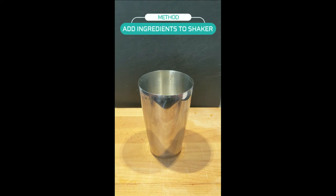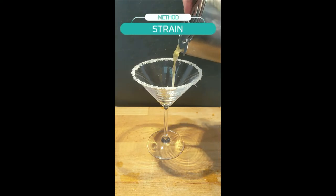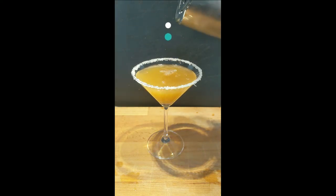And now, add ice and your ingredients to a shaker, and then give it a nice vigorous shake. Now, strain your drink into the sugar-rimmed glass, and then garnish with a lemon twist.